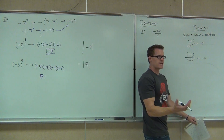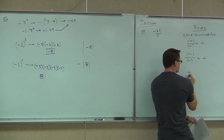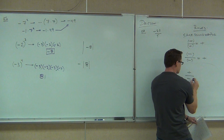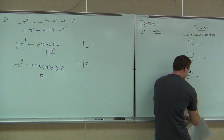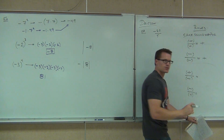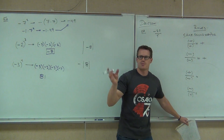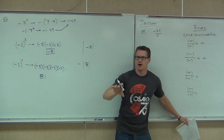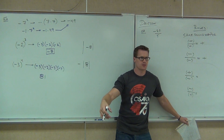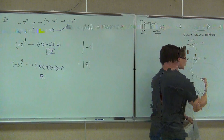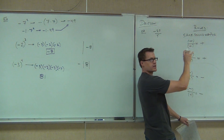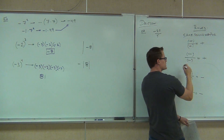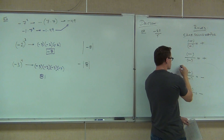We have two more cases. We can divide a positive by a negative, or a negative by a positive. In either case, if we divide a positive by a negative, or a negative by a positive, what is our quotient going to be? Negative. Definitely — just like multiplication. Same signs mean a positive quotient. Different signs mean a negative quotient.